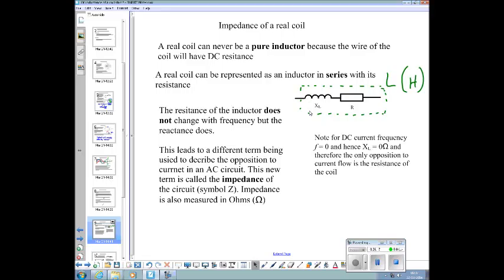So this leads to a different term being used to describe the opposition to current, the overall opposition to current in an AC circuit is called the impedance of the circuit. When we're talking about AC circuits, technically we should always talk about impedance rather than resistance. Resistance is part of it, but that's not the whole story when we connect AC. If we've got just a resistor, then that's all we've got, but as soon as you've got an inductor in there, or a capacitor, then you've got reactance XL or XC, and therefore you've got an overall impedance as the opposition to flow.